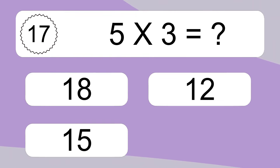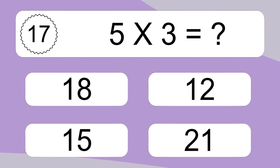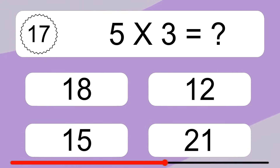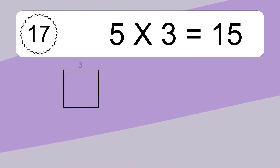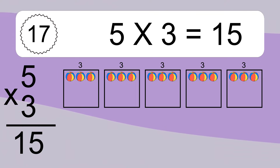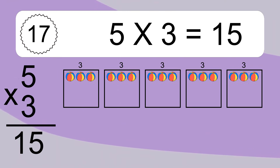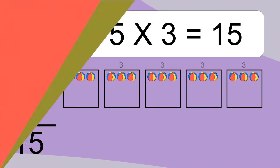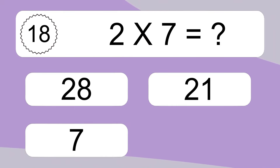5 times 3 equals 15. We have 5 boxes and each box has 3 colorful balls inside. If you count all the balls in all the boxes together, you will have 5 times 3 balls. This equals 15 balls.